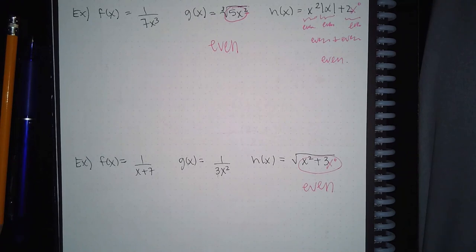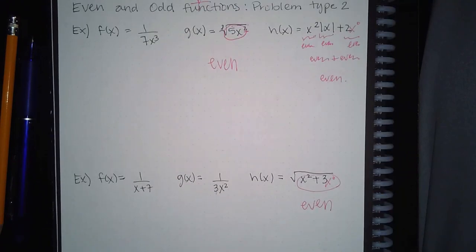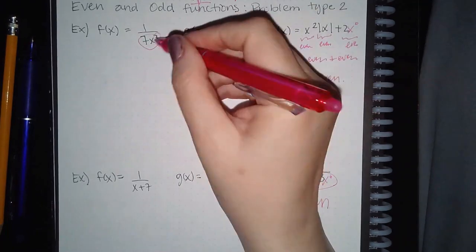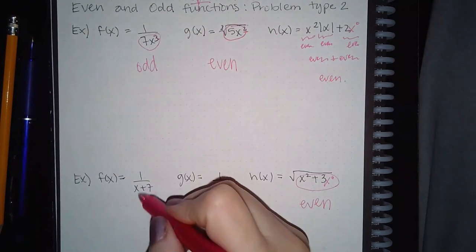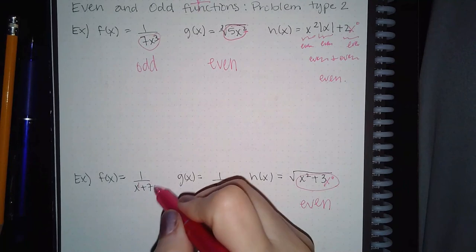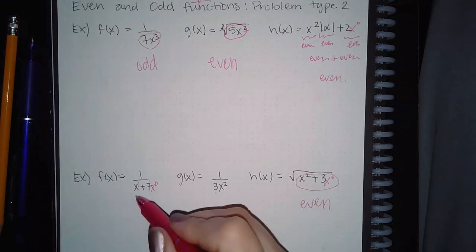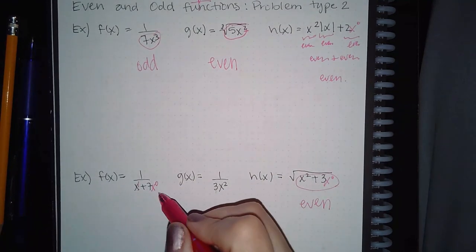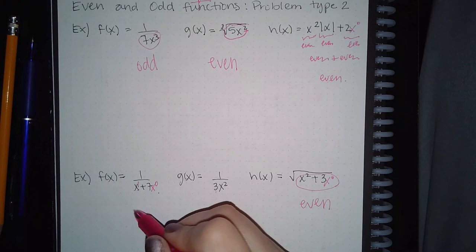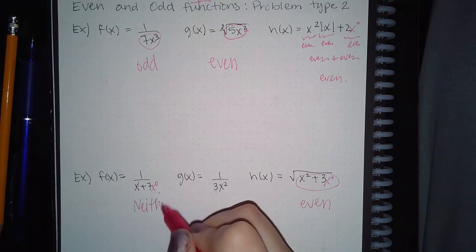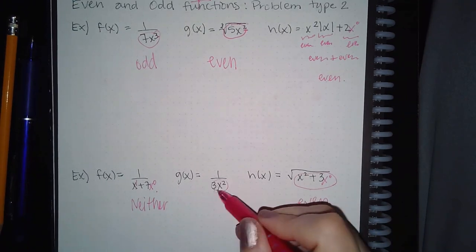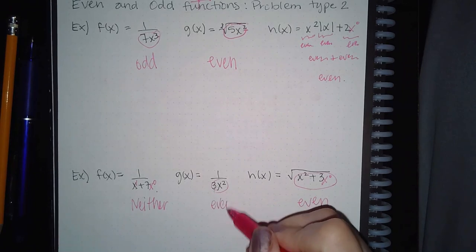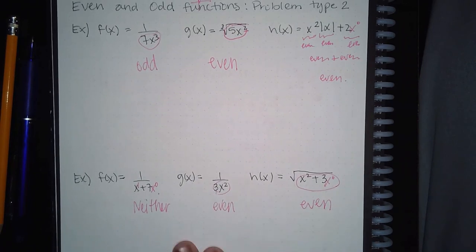For fractions, treat them just like regular functions. Here there's only one term in the denominator and it's odd, so the whole thing is odd. Here you have x to the one and x to the zero — you can't have part odd and part even, so this one is neither. And here you have x squared, which is even, so the whole thing is even. And that's the end of module 26.